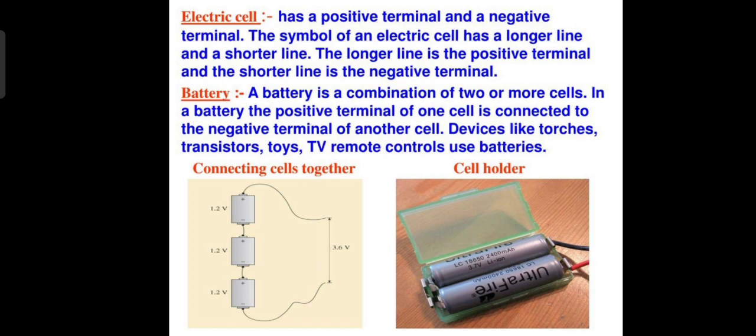The battery is a combination of two or more cells. In a battery, the positive terminal of one cell is connected to the negative terminal of another cell, such as in toys, transistor radios, and TV remote controls that use this type of battery.